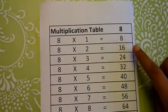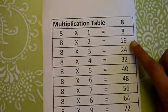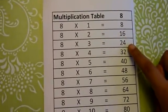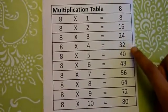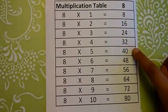8 1s are 8, 8 2s are 16, 8 3s are 24, 8 4s are 32, 8 5s are 40,